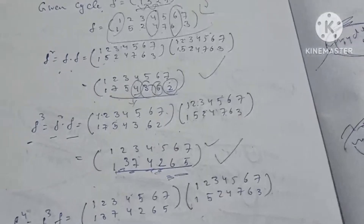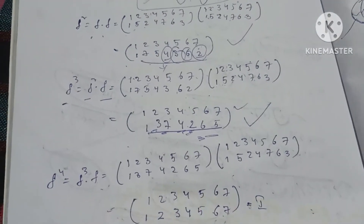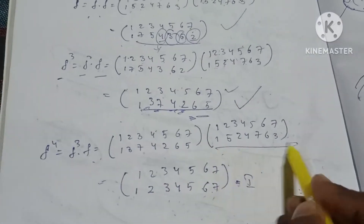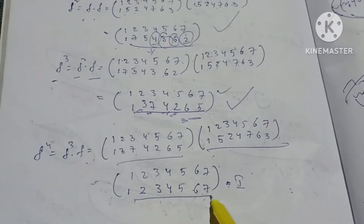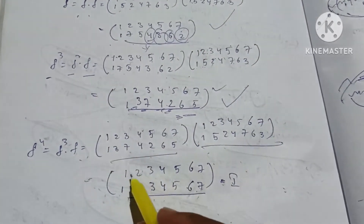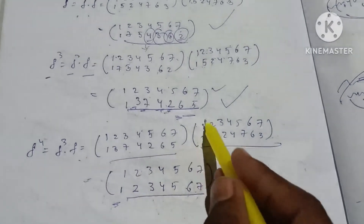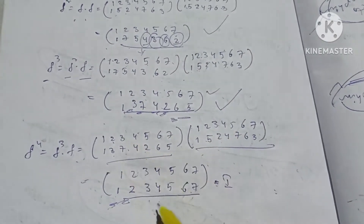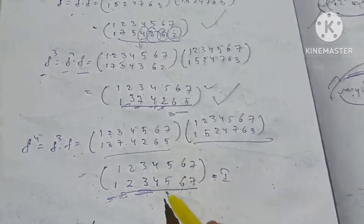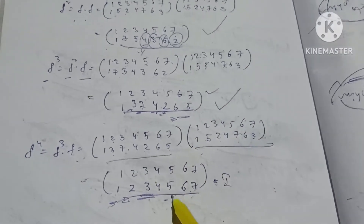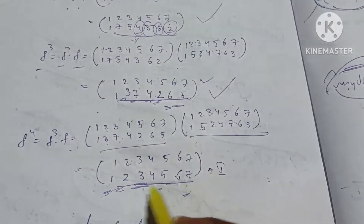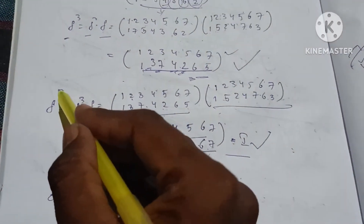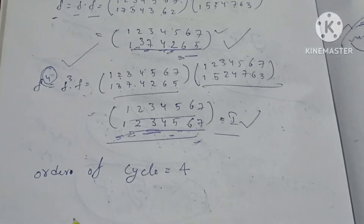F⁴ = F³ into F. F cube value multiplied by F value. Multiplying: 2×3. 4×4, 4×4. 5×7, 7×5. 6×6. Remaining: 7×3, 3×7. Pi values are the same — the value is equal to the identity I. Therefore, the order of the cycle is 4. Power is equal to 4, so order of cycle is equal to 4.